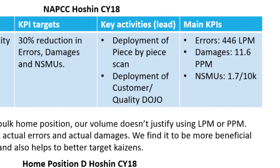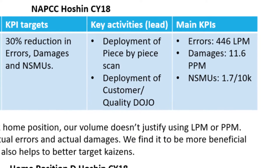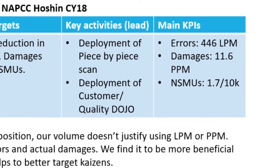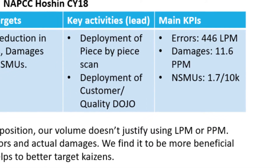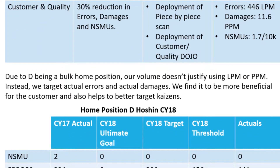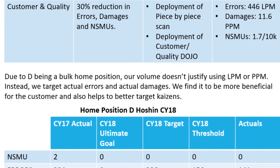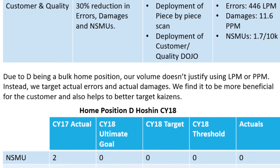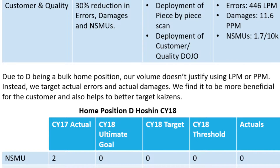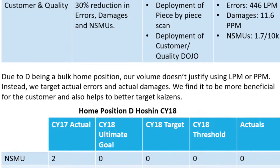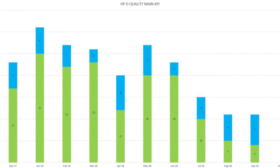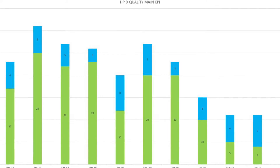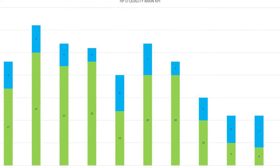Errors: 446 lines per million. Damages: 11.6 pieces per million. Non-scan MUs: 1.7 for every 10,000. Home Position D being a bulk home position, our volume doesn't justify using lines per million or pieces per million. Instead, we target actual errors and actual damages. We find this to be more beneficial for the customer and to help us better target Kaizens. This is Home Position D's quality main KPI in graph form. We find the graph format gives us a better understanding on how we are trending and where we should focus our Kaizen efforts.